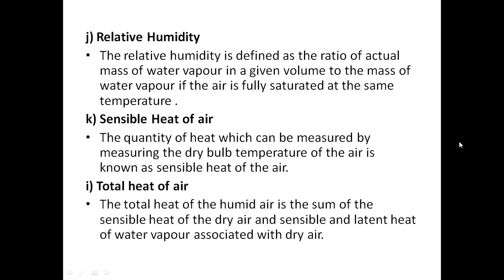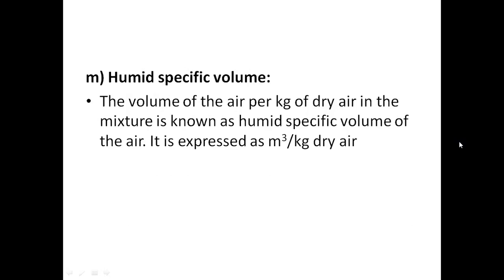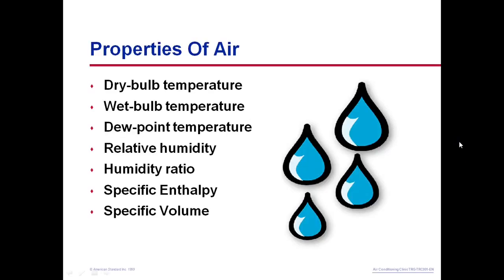Sensible heat of air is the quantity of heat measurable by measuring the DBT of air. Total heat of air is the sum of sensible heat of dry air and both sensible and latent heat of water vapors. Humid specific volume is the volume of air per kg of dry air in the mixture, expressed as cubic meters per kg of dry air — it is the inverse of density.